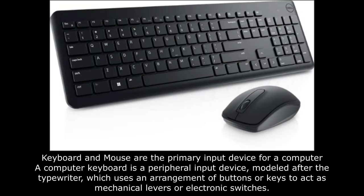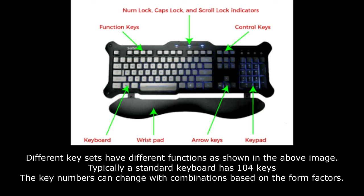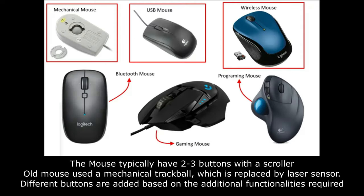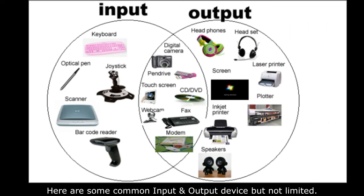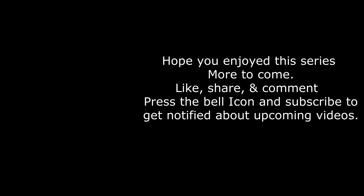Keyboard and mouse are the primary input devices for a computer. A computer keyboard is a peripheral input device modeled after the typewriter, which uses an arrangement of buttons or keys to act as mechanical levers or electronic switches. Different keysets have different functions. Typically a standard keyboard has 104 keys; the key numbers can change with combinations based on form factors. The mouse typically has two to three buttons with a scroller. Old mice used a mechanical trackball, which is replaced by a laser sensor. Different buttons are added based on additional functionalities required. Here are some common input and output devices but not limited.